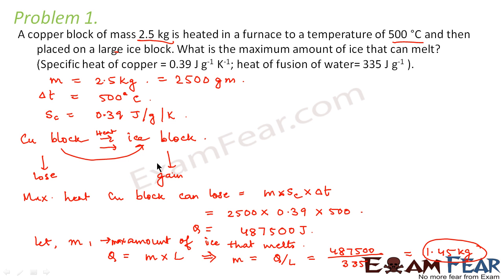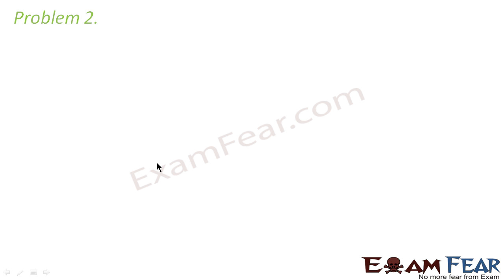This comes out to be 1.45 kg. So that is the amount of ice that can melt. To summarize: the copper block was first heated so it gained some heat, then placed on the ice block so it releases that heat. The ice block gains that heat and uses it to convert from solid state to liquid state. We used Q = m·sc·ΔT to find the heat, then Q = m·L to find the mass of ice melted.